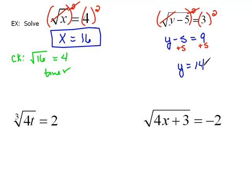And then we do need to double-check ourselves. So if we do the quick check on there, that would be the square root of 14 minus 5 is supposed to equal 3. Well, 14 minus 5 is 9. And yes, in fact, the square root of 9 is 3. So that tells us that our answer was correct. y equals 14.